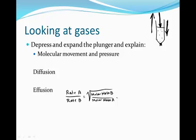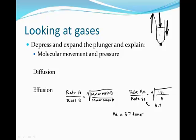In general, the heavier the gas, the slower it moves. So if I wanted to compare the rate of helium to the rate of xenon, we would take the square root of their formula masses in inverse order. The mass of helium is in the denominator, and the mass of xenon, which is 131, is in the numerator. Taking the square root of 131 divided by 4, I get 5.7 — meaning helium is 5.7 times faster than xenon.